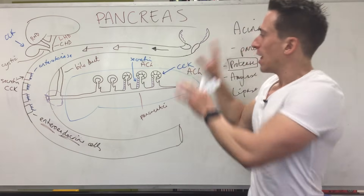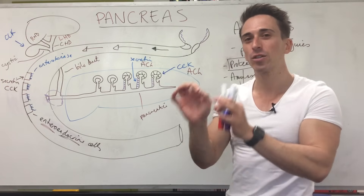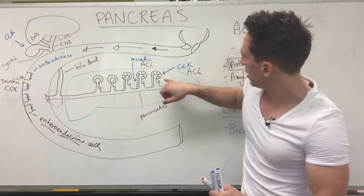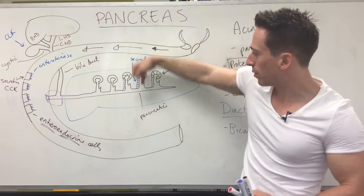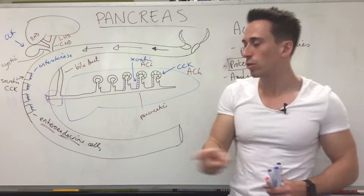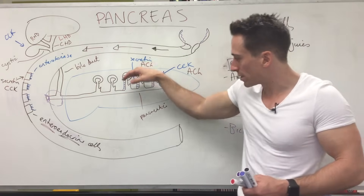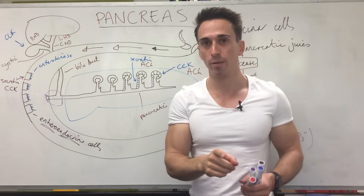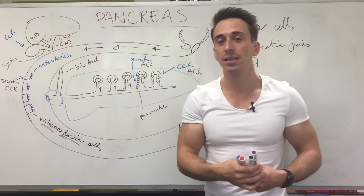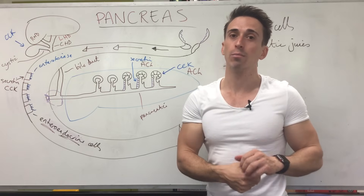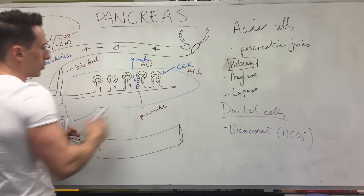What we've described so far is the exocrine function of the pancreas — all the pancreatic juices and bicarbonate were released into ducts. Now we need to talk about the endocrine function, where the pancreas releases hormones into the bloodstream. The pancreas is important for controlling blood glucose levels and plays a central role in diabetes.